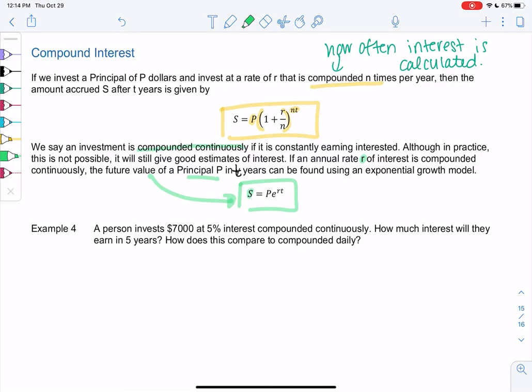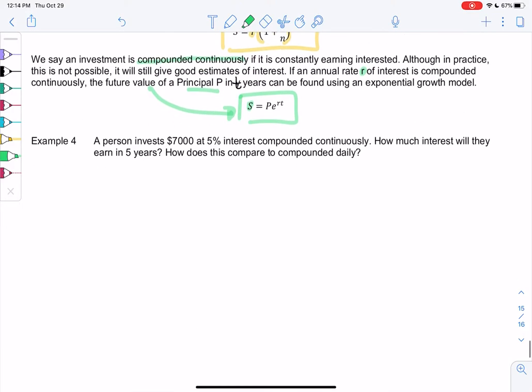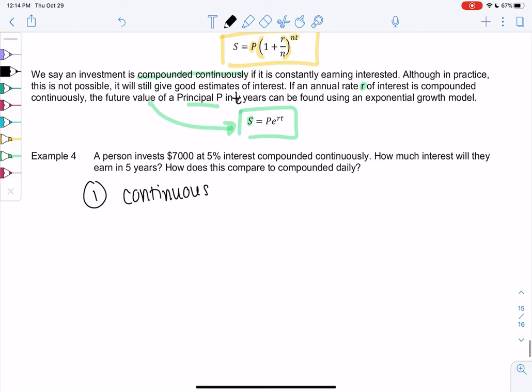So we have a person invest $7,000 at 5%, compounded continuously. How much interest will they earn in five years? And then we'll compare this to compounded daily. So let's do continuous interest first. It's an easier equation, there's less going on.